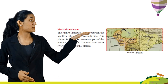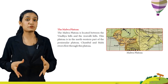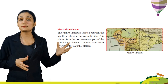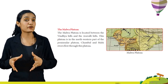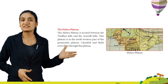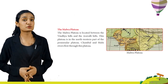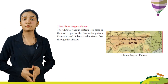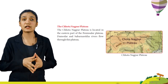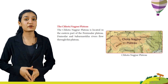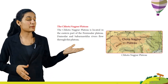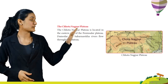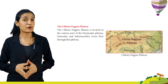The Malwa Plateau is located between the Vindhya Hills and the Aravalli Hills in the north-western part of the Peninsular Plateau. Chambal and Mahi rivers flow through this plateau. The Chota Nagpur Plateau is located in the eastern part of the Peninsular Plateau. Damodar and Subarnarekha rivers flow through this plateau.